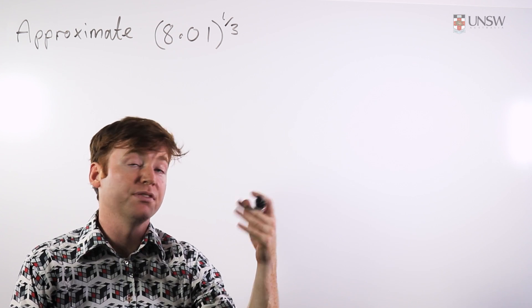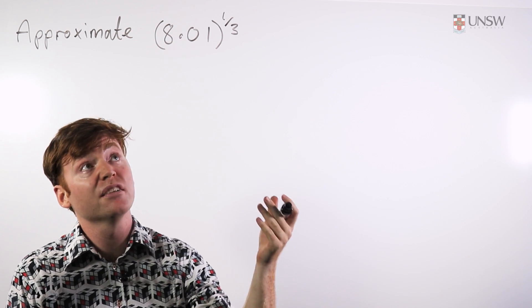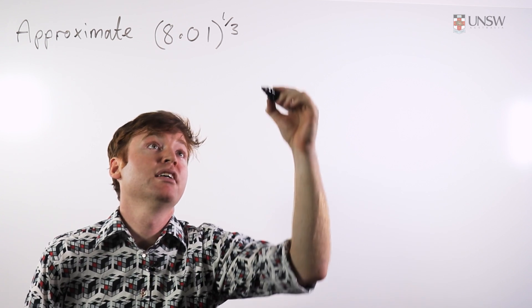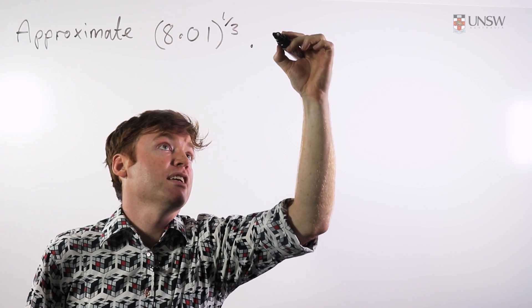Initially, if you were asked just to roughly approximate this quantity, you could say well 8.01, that's about 8, and 8 is the kind of number I can take a cube root from. So let's just write this out.